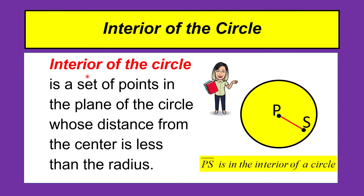The interior of the circle is the set of points in the plane of the circle whose distance from the center is less than the radius. We have point P as the center and point S in the interior. If we connect them, segment PS is less than the radius, so segment PS is in the interior of the given circle.